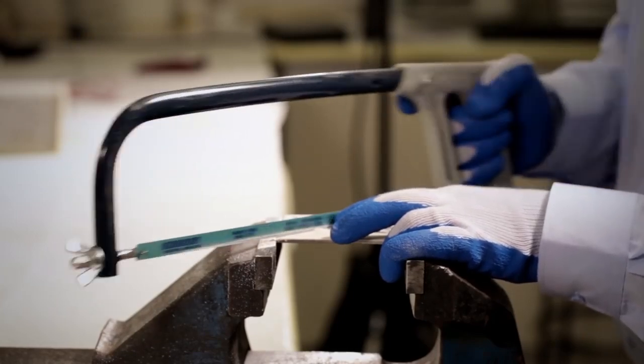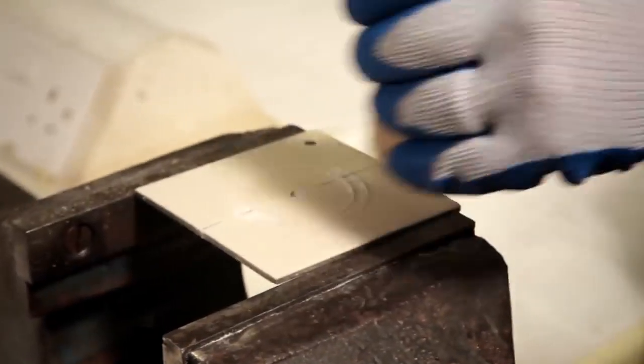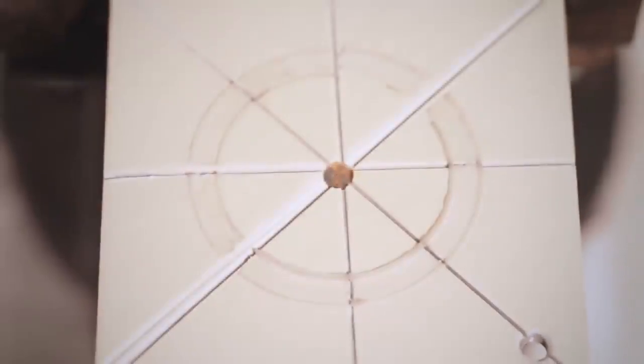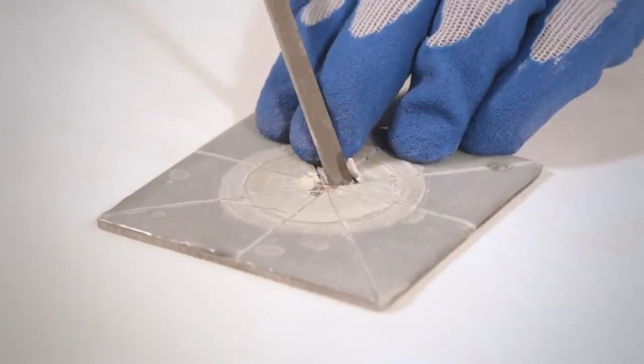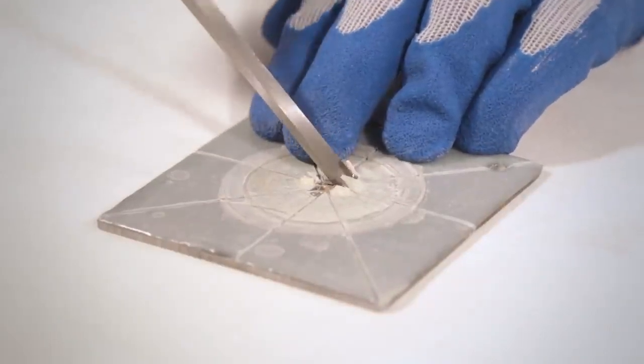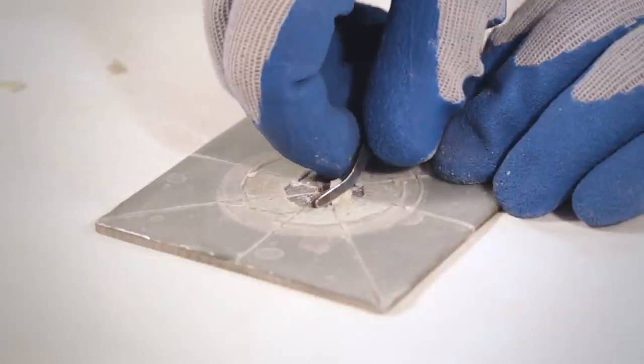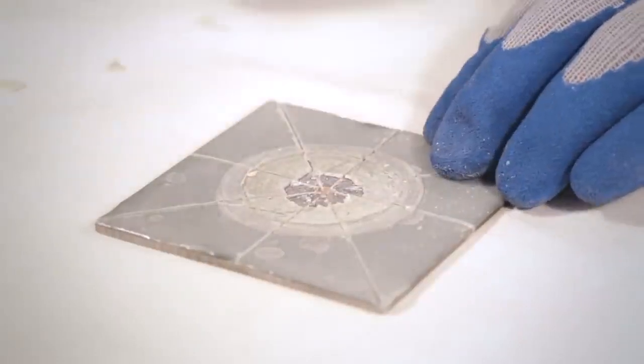Radial incisions are then made into the coating through to the substrate using a sharp knife or in the case of a rigid hard coating, a hacksaw. The incisions are made from the damaged site out across to the edge of the cup area, approximately 30 degrees apart. A chisel is then inserted under the coating at the damaged site and used to gently prise upwards. The coating is broken away until a firmly adhered edge is encountered.